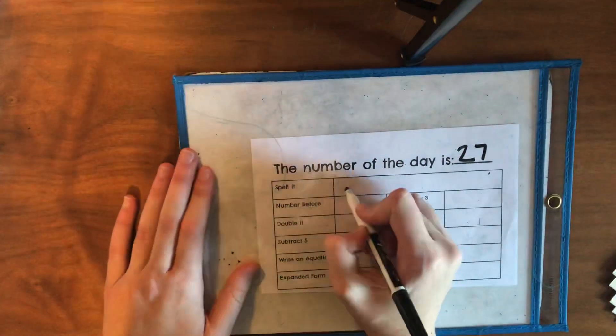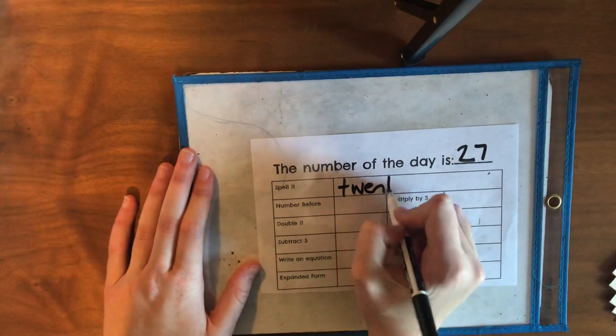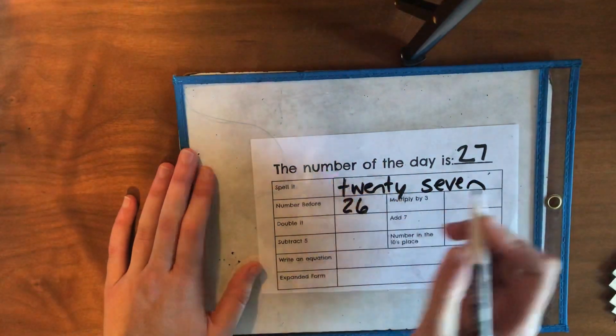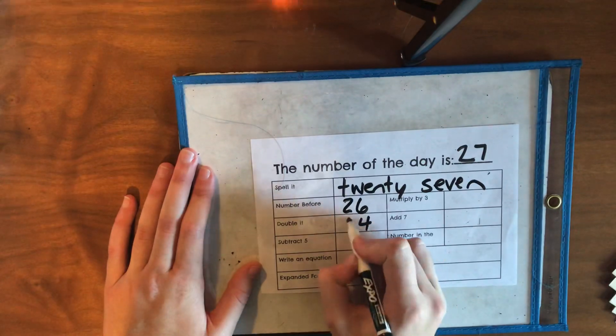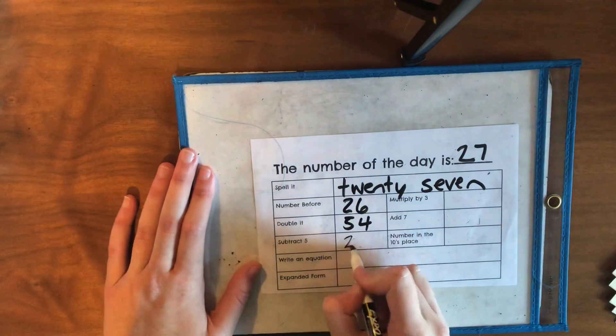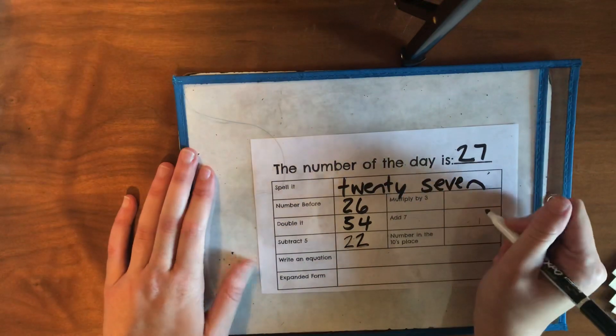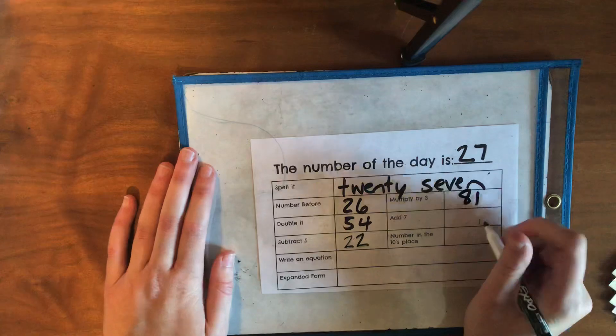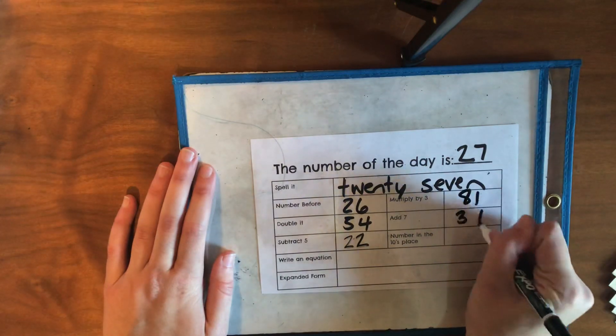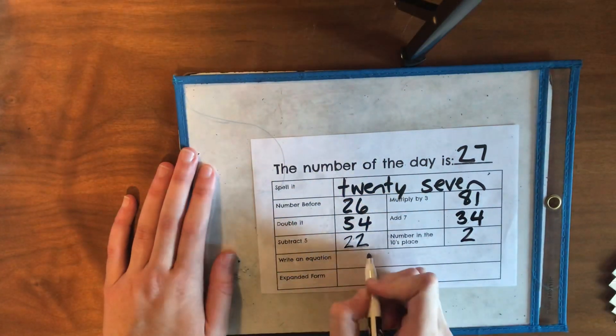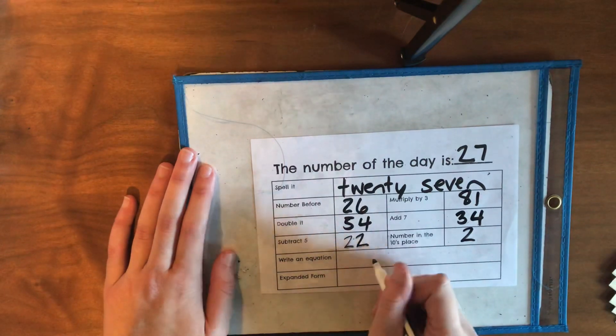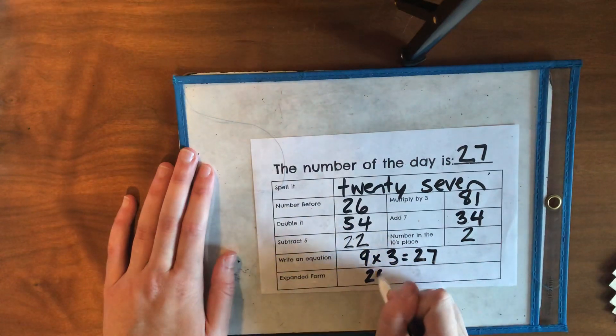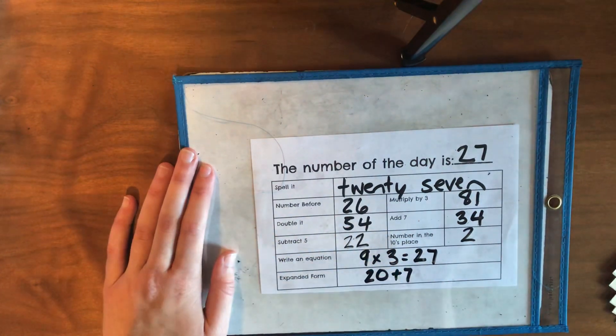Alright, time to check. So 27, two words. Number before is 26. If I double it, I get 54. Subtract 5, it's 22. Multiply by 3, 81. Add 7, 34. Number in the tens place is a 2. Write an equation. I'm going to do 9 times 3 equals 27. Expanded form, 20 plus 7.